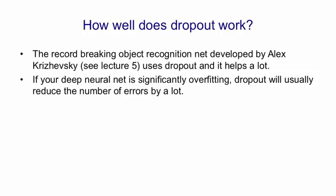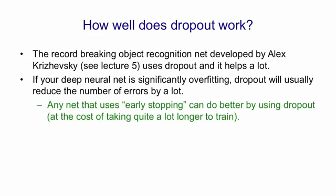In general, if you have a deep neural net and it's overfitting, dropout will typically reduce the number of errors by quite a lot. I think any net that requires early stopping in order to prevent it overfitting would do better by using dropout. It would, of course, take longer to train, and it might need more hidden units.